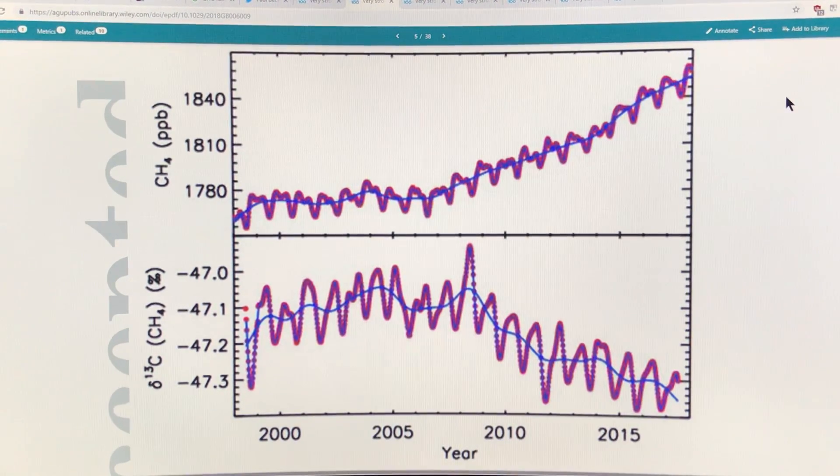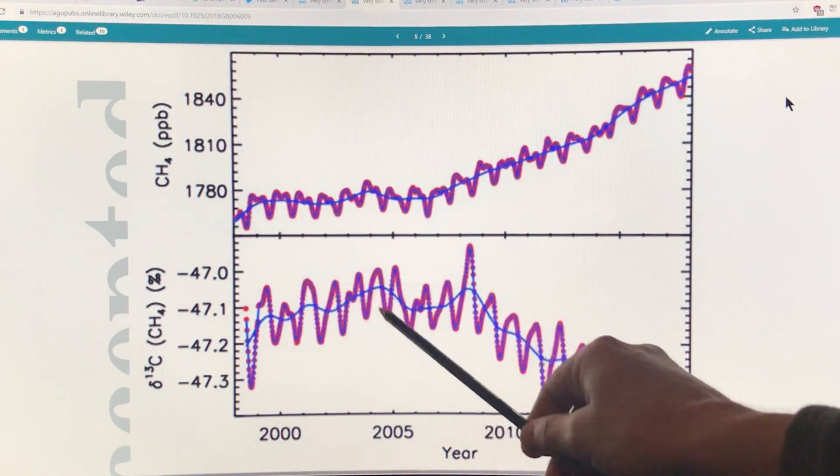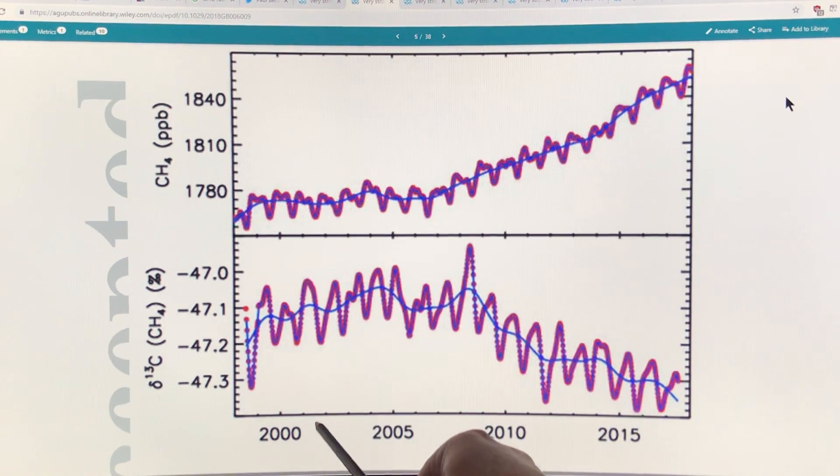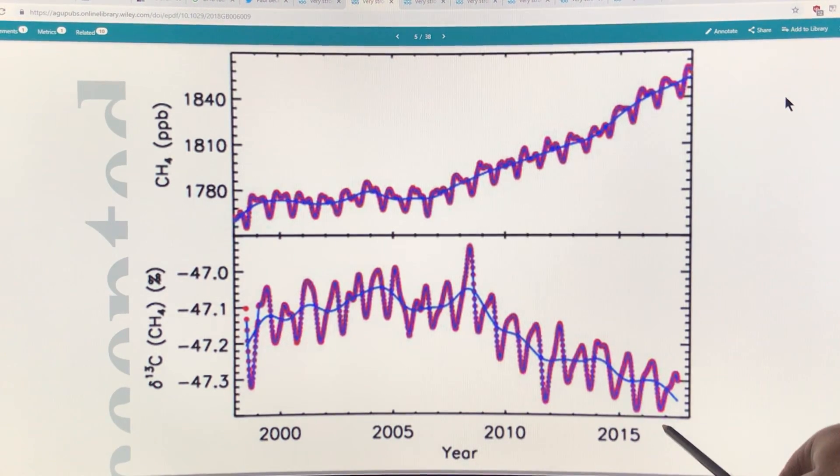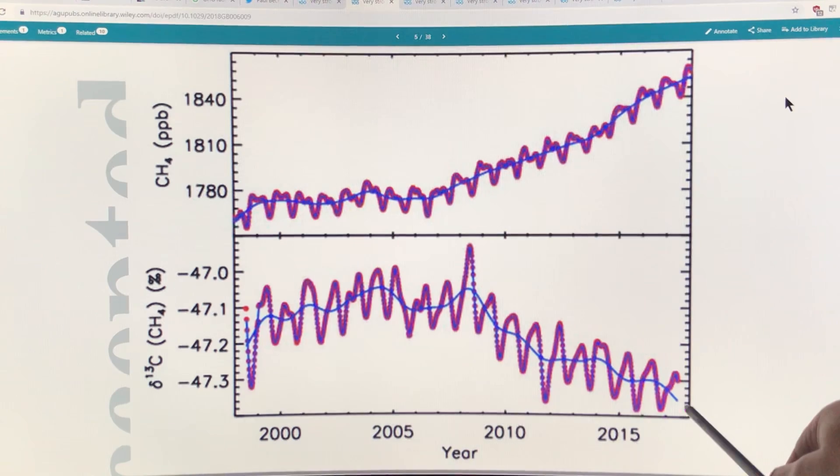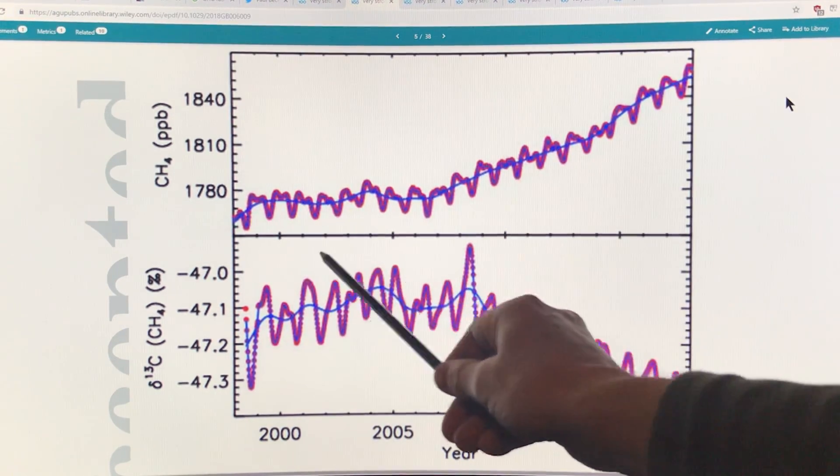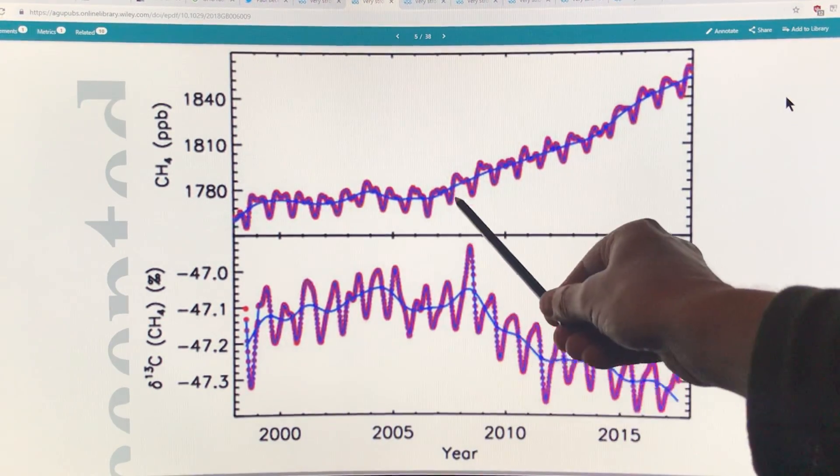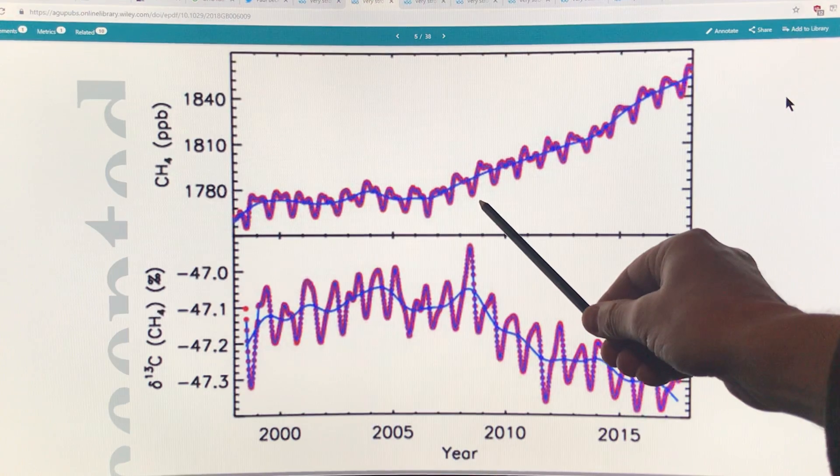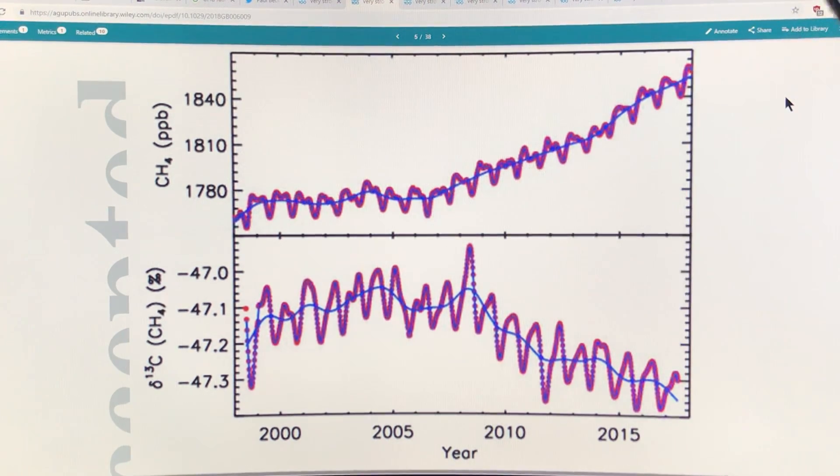In the top chart is the methane in parts per billion from pre-2000 up to present day, and what you can see is about 2007 there was an uptick. Since 2007 in the last decade we've had a rise of about 75 parts per billion of methane that corresponds to a rise of about seven parts per billion per year.